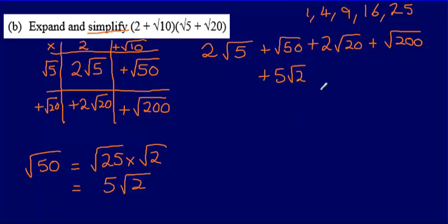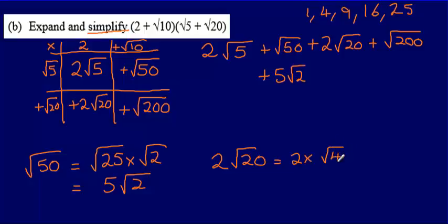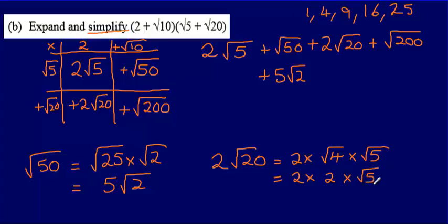Now I'll look at 2 root 20. The root 20 part has a square number as a factor, so I can write this as 2 multiplied by the square root of 4 multiplied by the square root of 5, since root 4 times root 5 gives root 20. Rewriting: 2 multiplied by 2 multiplied by root 5, which is 4 root 5.